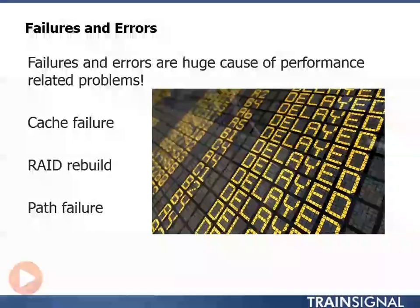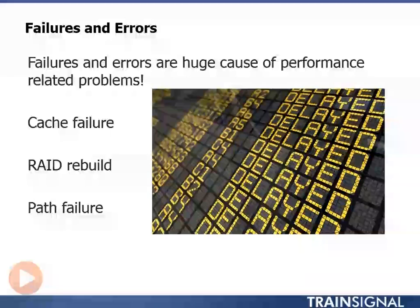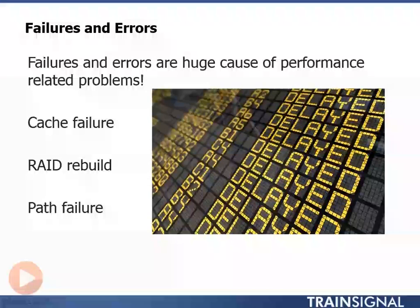Then there's things like path failures. If a host has two paths to storage and is using both of them in an active-active mode, if one of those paths fails, then the potential throughput to storage is halved.